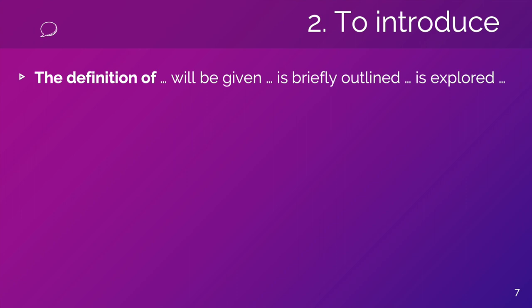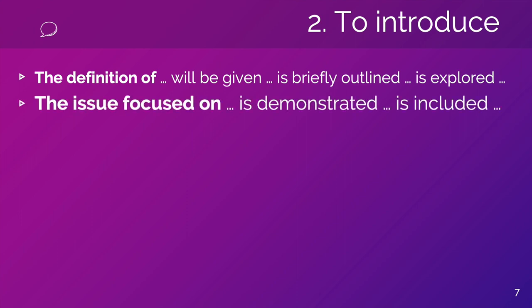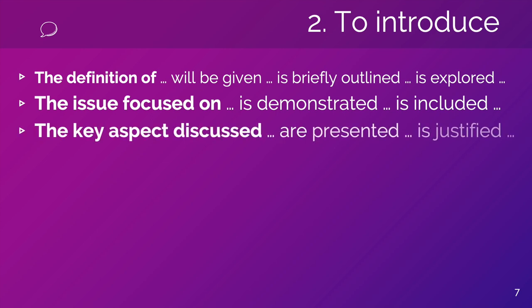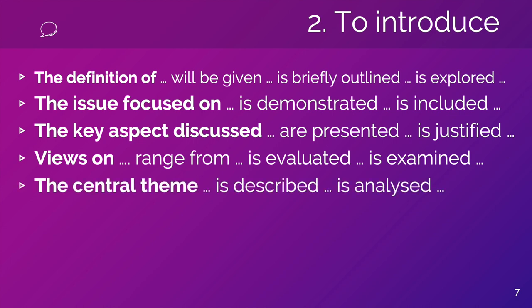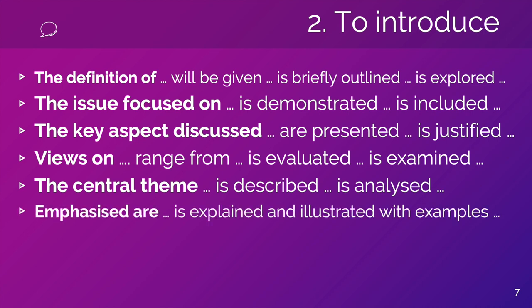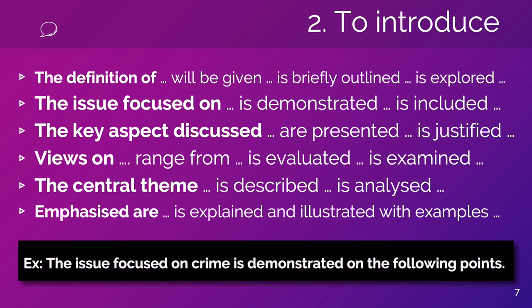Now let's take a look at the second group — to introduce ideas. We can say: 'the definition of... will be given,' or 'is briefly outlined,' 'is explored.' 'The issue focused on... is demonstrated,' 'is included.' 'The key aspects discussed are presented,' 'is justified,' 'views on... range from,' 'is evaluated,' 'is examined.' Or 'the central theme is described,' 'is analyzed,' 'emphasized,' 'is explained,' and 'illustrated with examples.' For example: 'The issue focused on crime is demonstrated on the following points.'